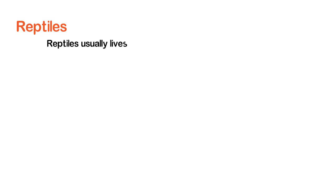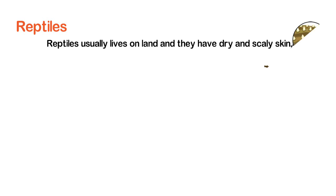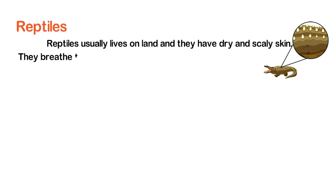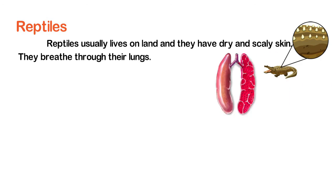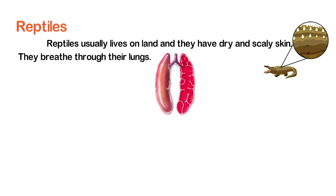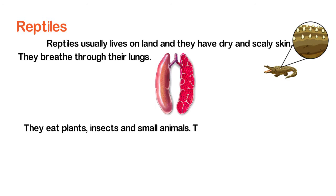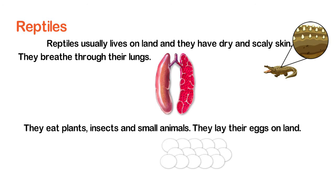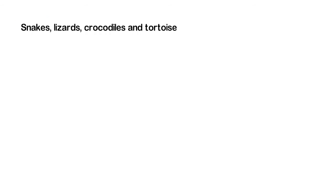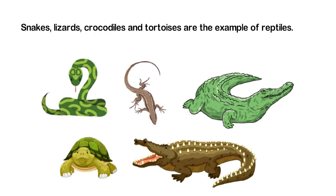Reptiles usually live on land and they have dry and scaly skin. They breathe through their lungs. They eat plants, insects, and small animals. They lay their eggs on land. Snakes, lizards, crocodile, and tortoises are examples of reptiles.